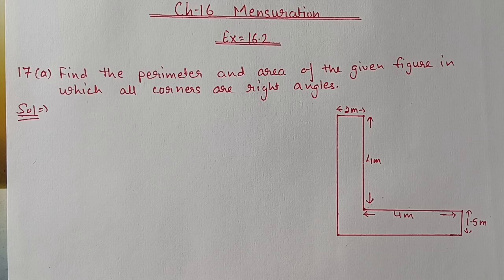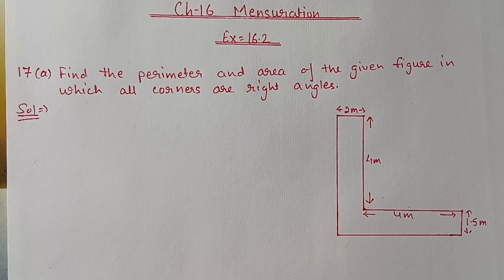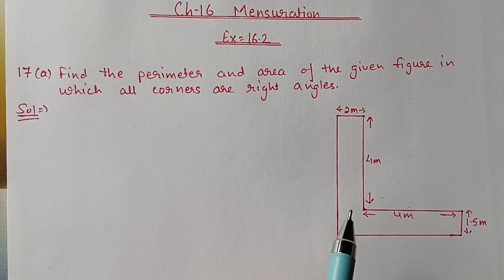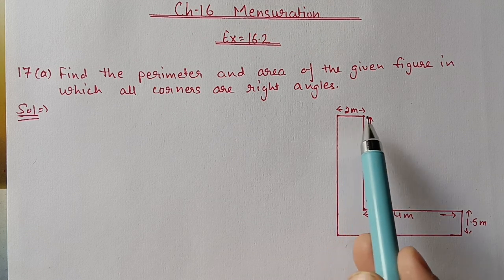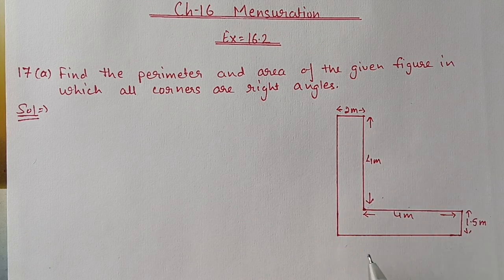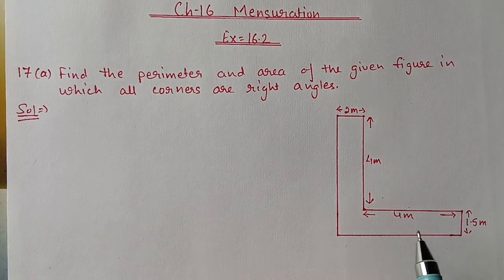Hello students, we are doing Chapter 16 Mensuration, Exercise 16.2. In today's video we will start from Question 17, first part: find the perimeter and area of the given figure in which all the corners are right angles. An L-shape figure is given. We have to find out the perimeter and area. Perimeter means we have to measure the boundary, and for area we have to calculate the space occupied by the figure.